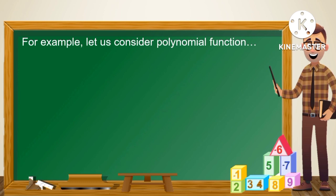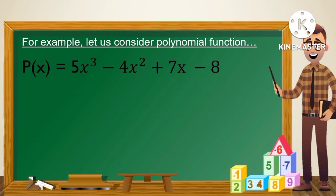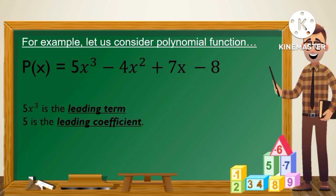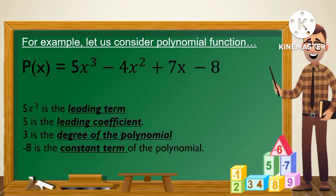For example, let us consider the polynomial function p of x is equal to 5x cubed minus 4x squared plus 7x minus 8. Let us determine the parts of the polynomial function. 5x cubed is the leading term. 5 is the leading coefficient of the leading term. 3 is the degree of the polynomial — it is the exponent of our leading term. Negative 8 is the constant term — it is the term that does not have a variable.